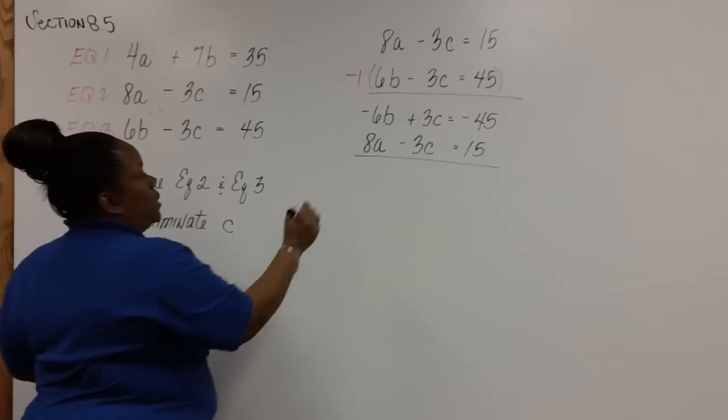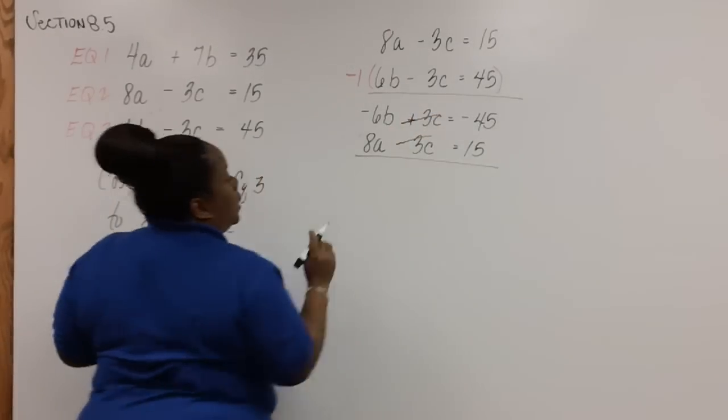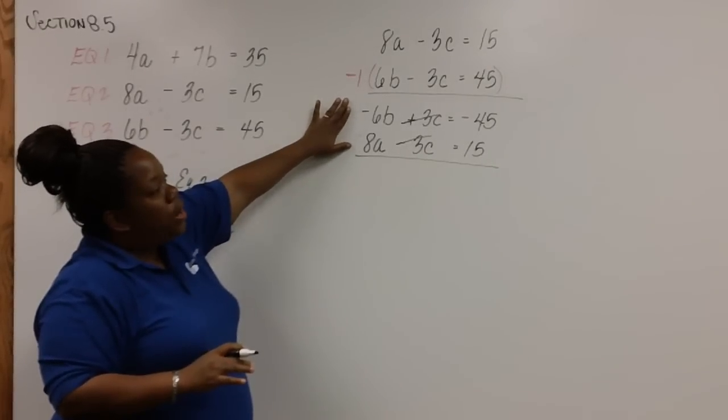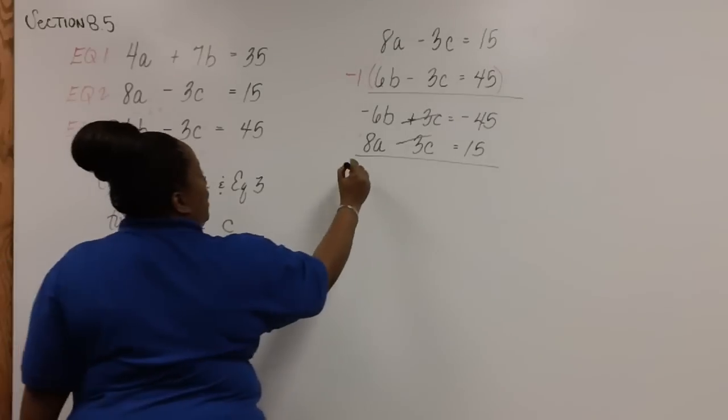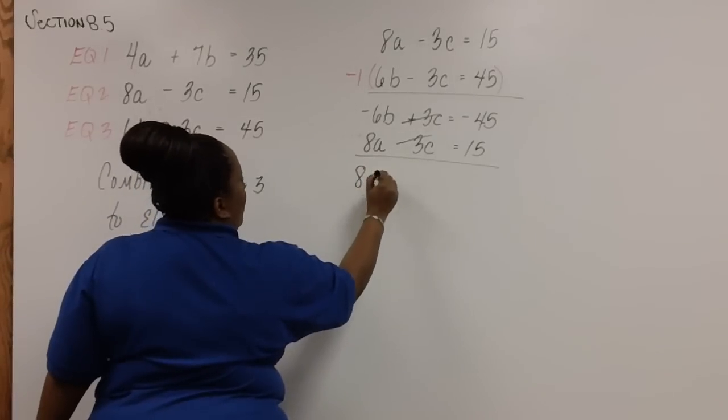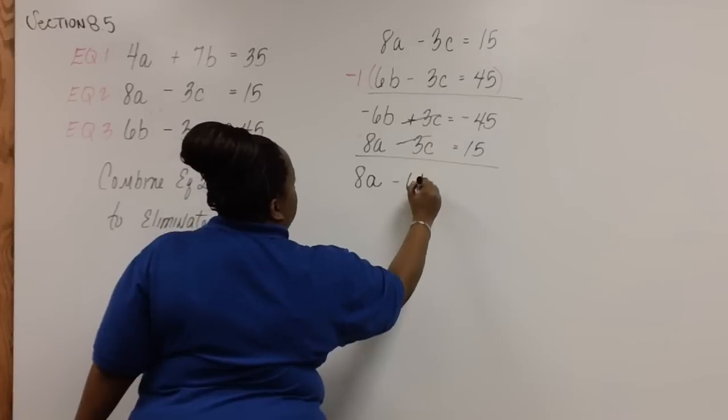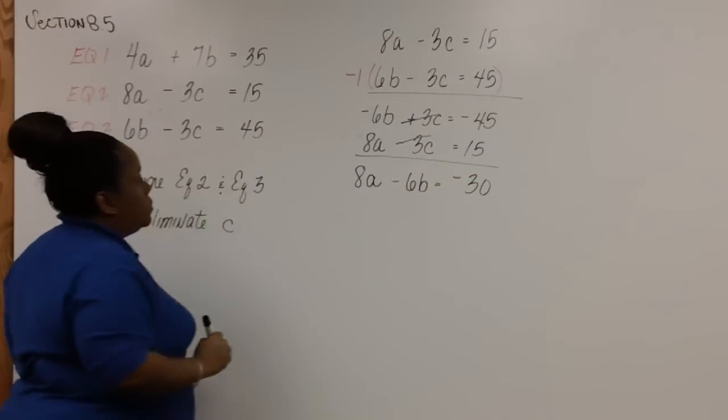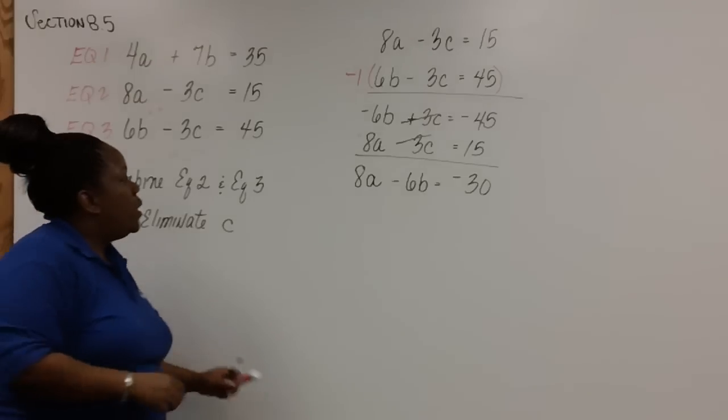And I can just bring the top equation down. Notice that the C's have been eliminated. Now, be careful. Be careful not to combine these two terms. They are not like terms. So just bring them down in alphabetical order. We have 8A minus 6B equals negative 15. And we'll call this equation four.